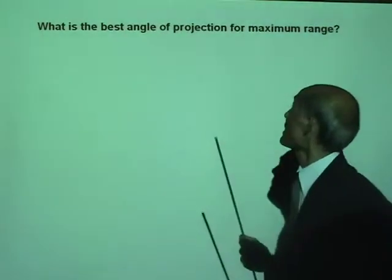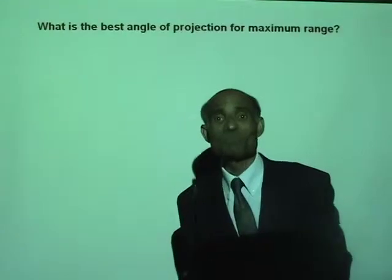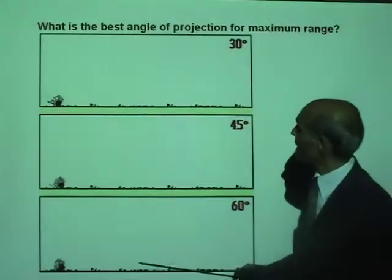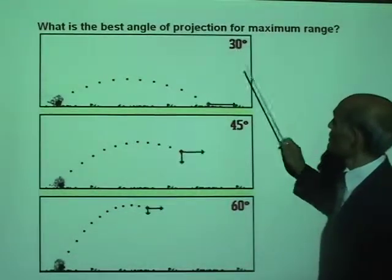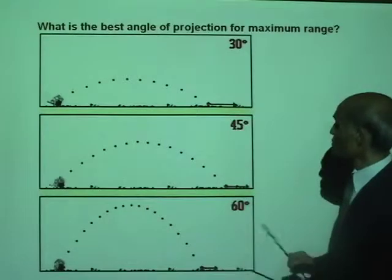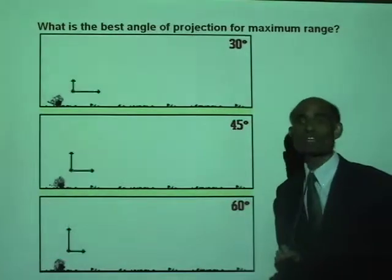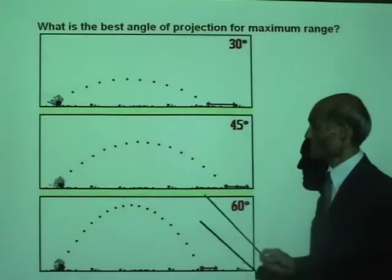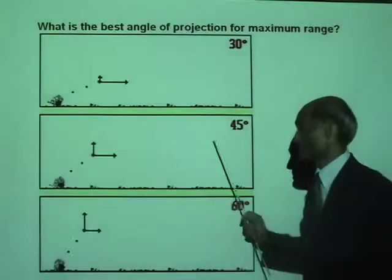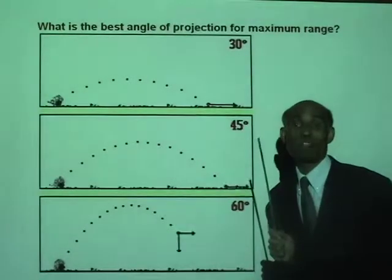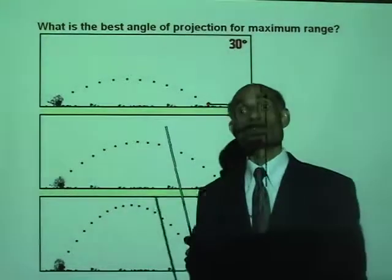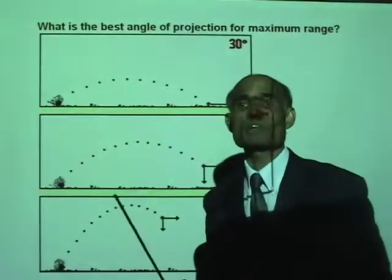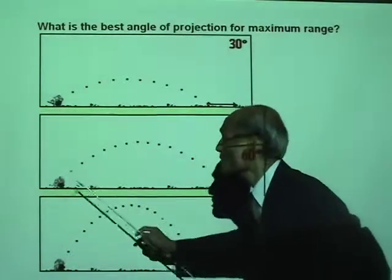What is the best angle of projection for maximum range? Here is an animation for angles of projection 30 degrees, 45 degrees, and 60 degrees. Which gives maximum range? Maximum range is for 45 degrees. If you want the golf ball to go the maximum horizontal distance, you must hit it at 45 degrees.